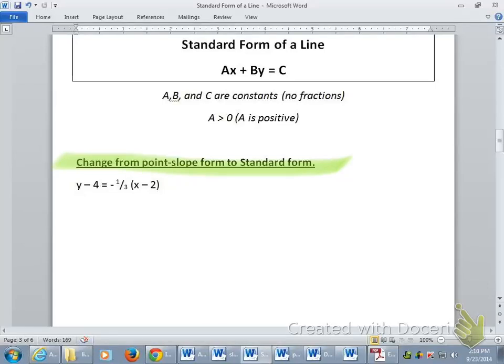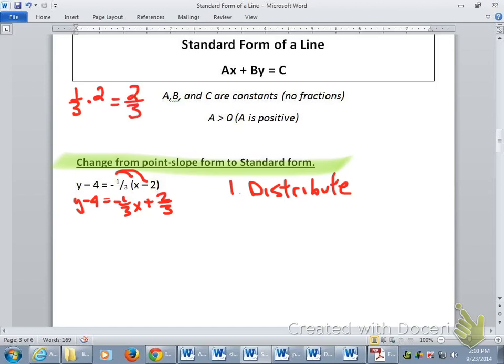So the first thing that we always take care of with point-slope form is to take care of this distributive property. So that's going to be the first thing I take care of. So we're going to distribute that. That's going to be y minus four equals negative one-third x plus two-thirds.